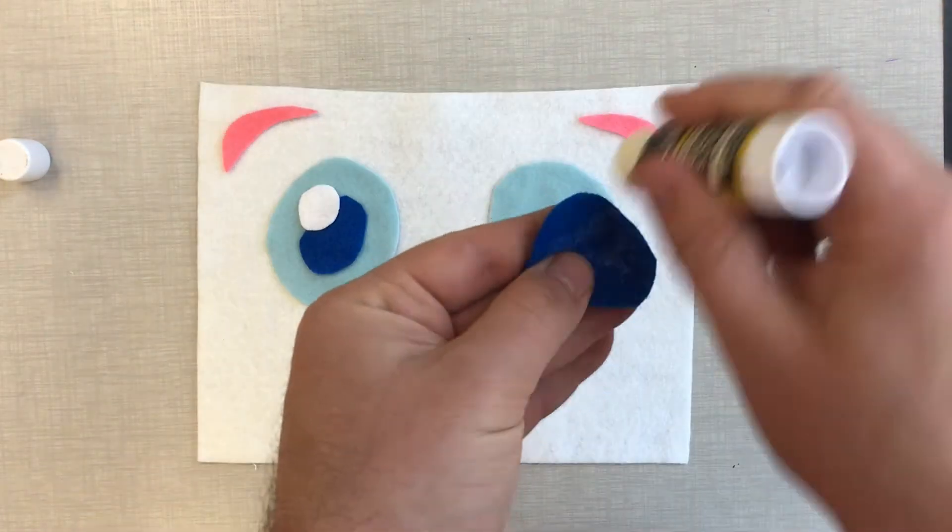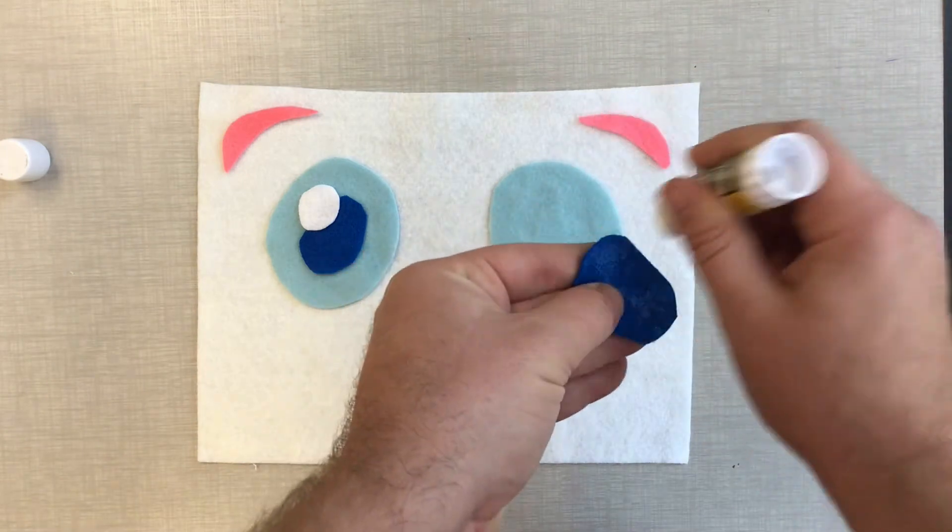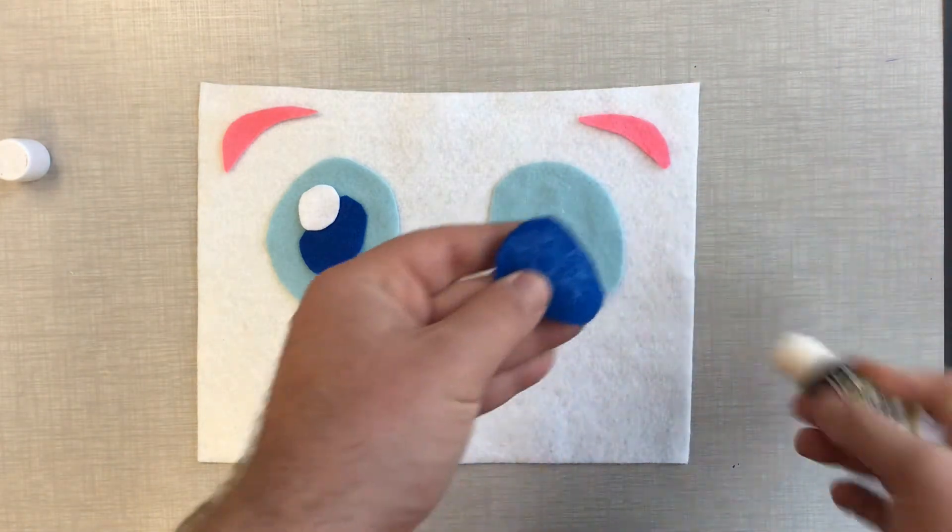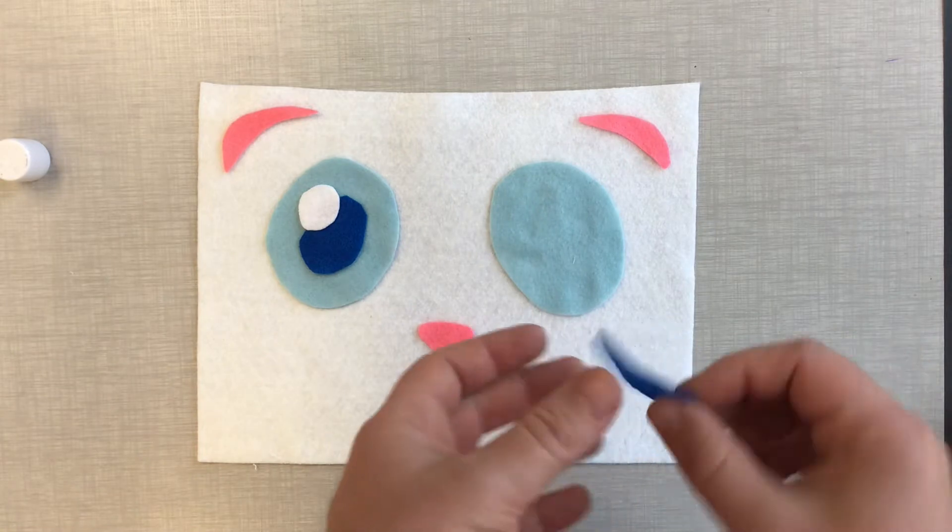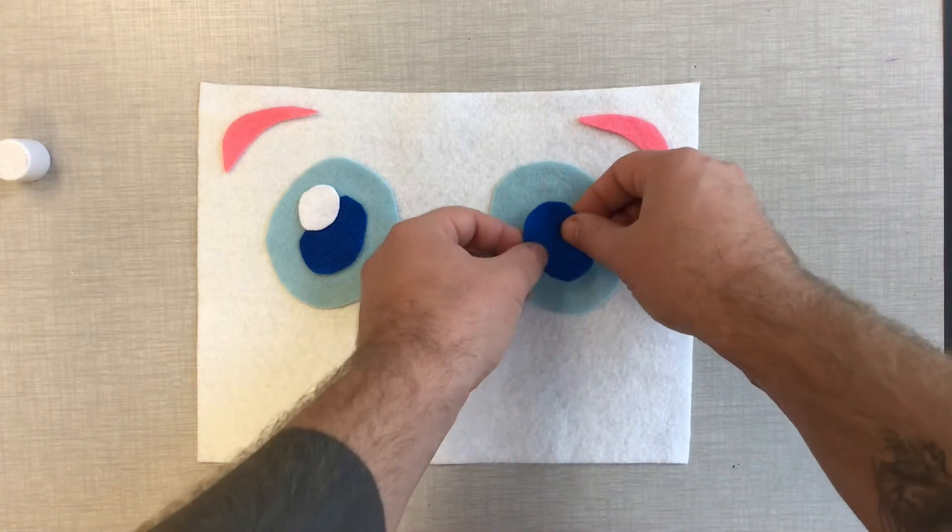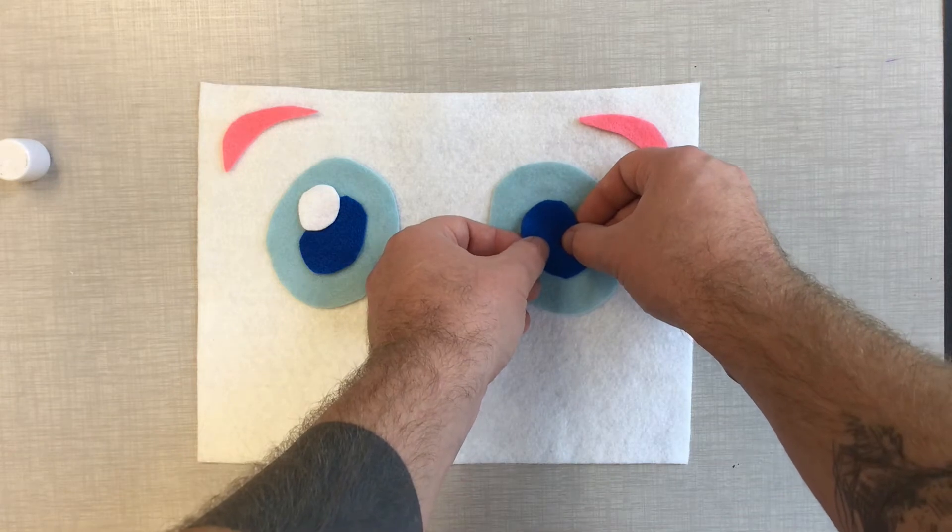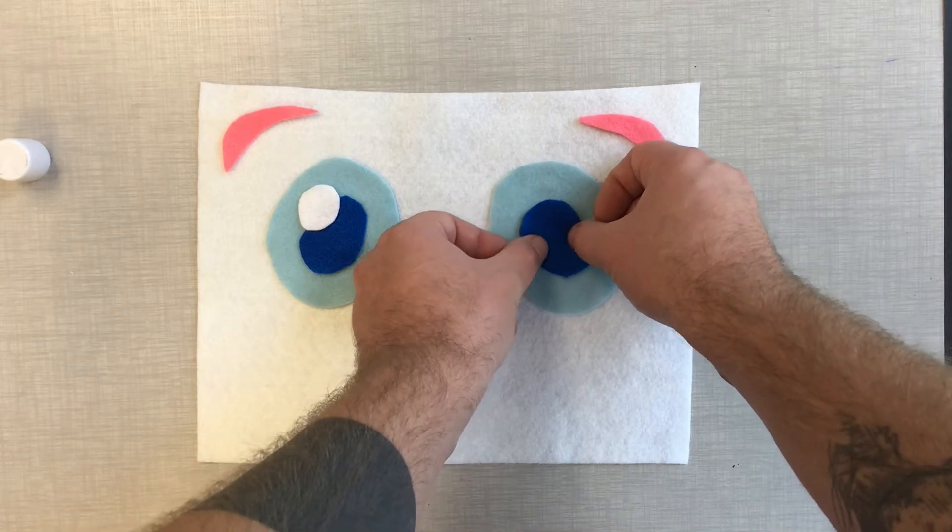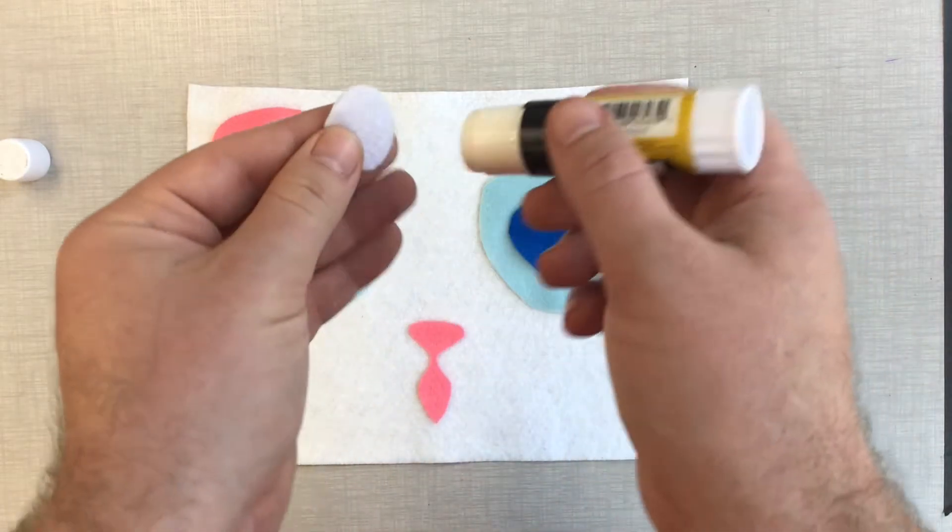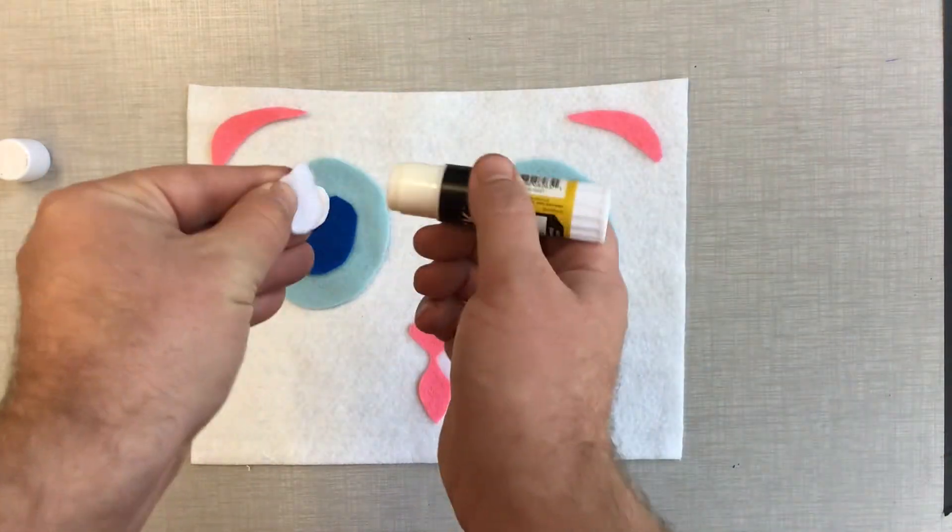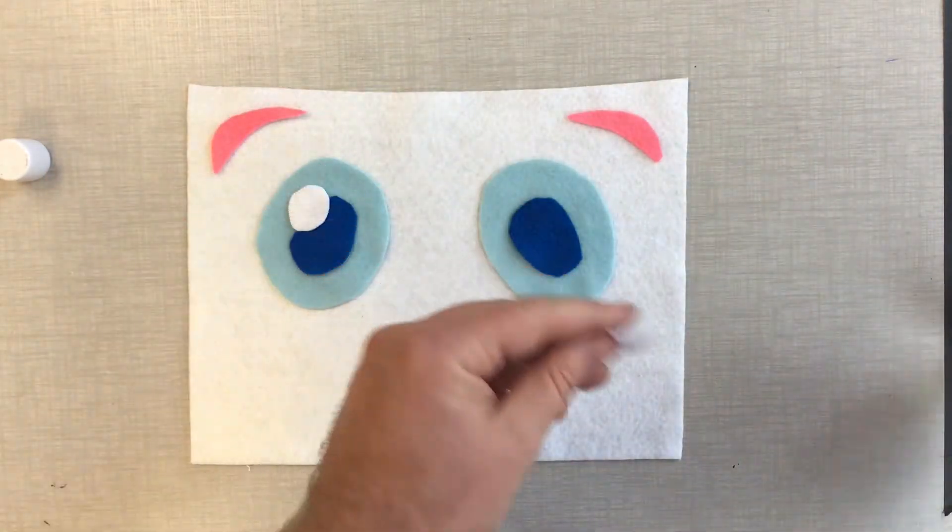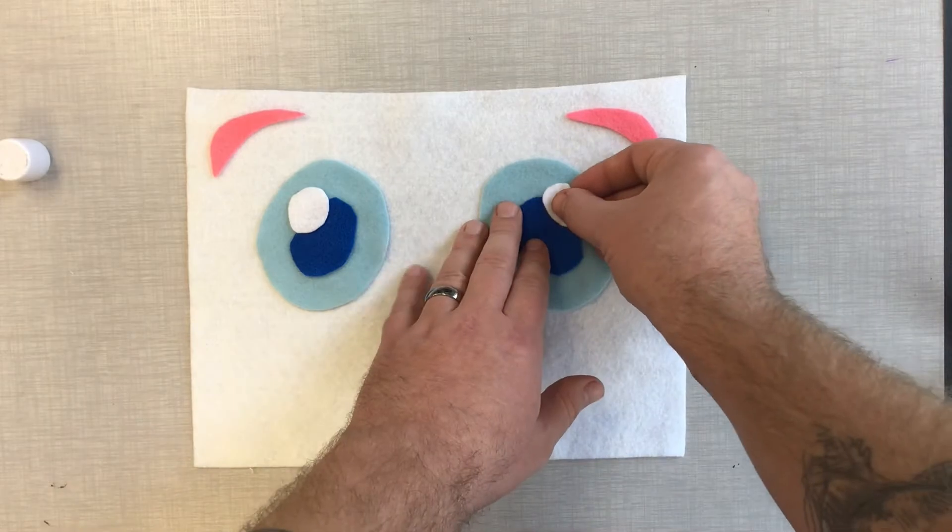Again, pressure. And then I'm putting the dark blue down for the pupil. And then I'm putting the white part down for the reflection that's on the eye. So it's all about layering upwards, okay?